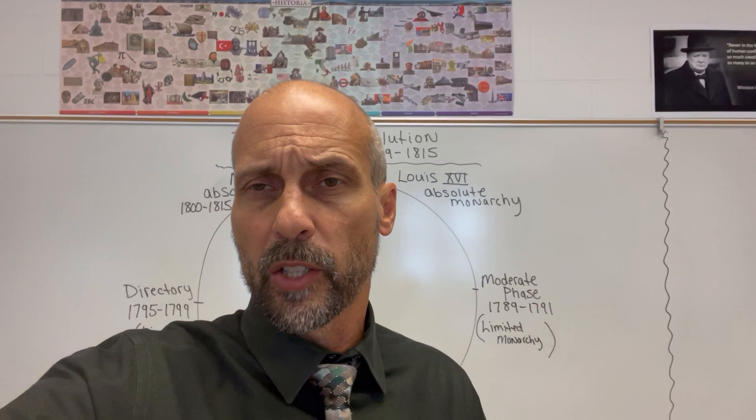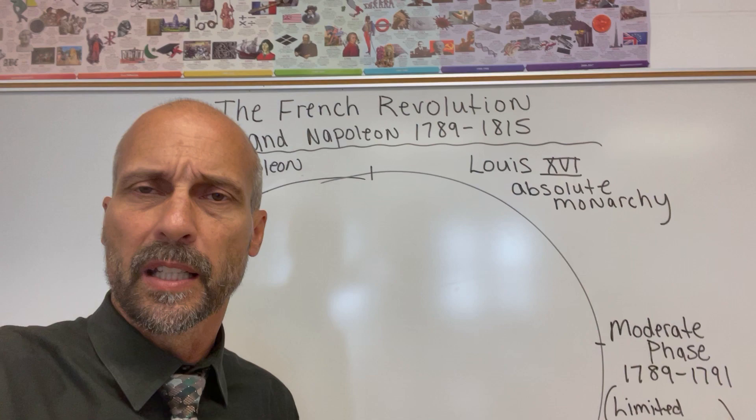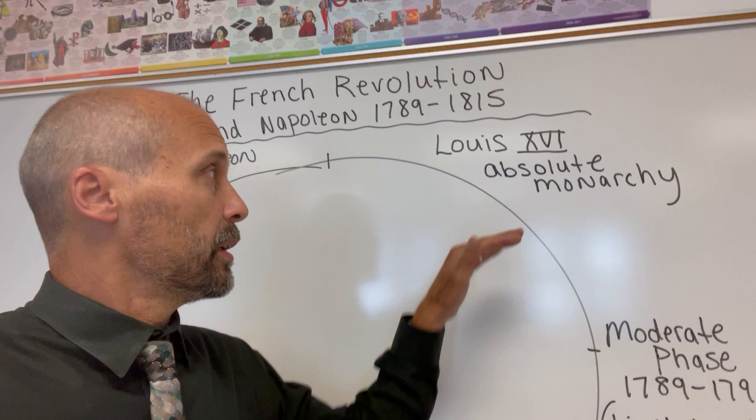I'm going to direct your attention to the board behind me and hopefully this will help over the next couple of weeks as we work our way through the revolution. On the top I entitled it the French Revolution and Napoleon, 1789 to 1815, and I drew a circle on the board. Let me walk us through what I call the various phases of the revolution — the stages that the revolution goes through — because I think that's the easiest way to understand it.